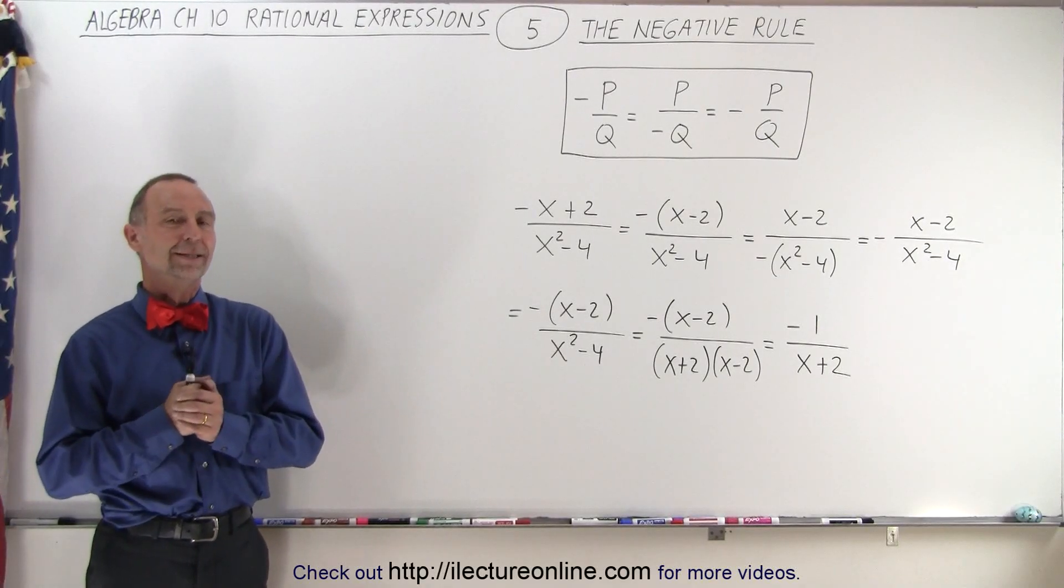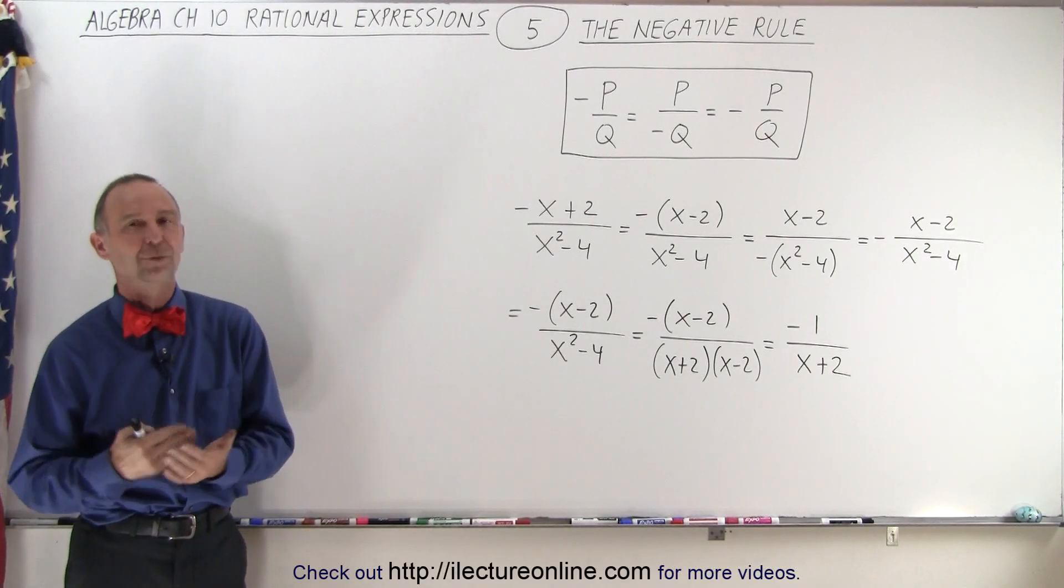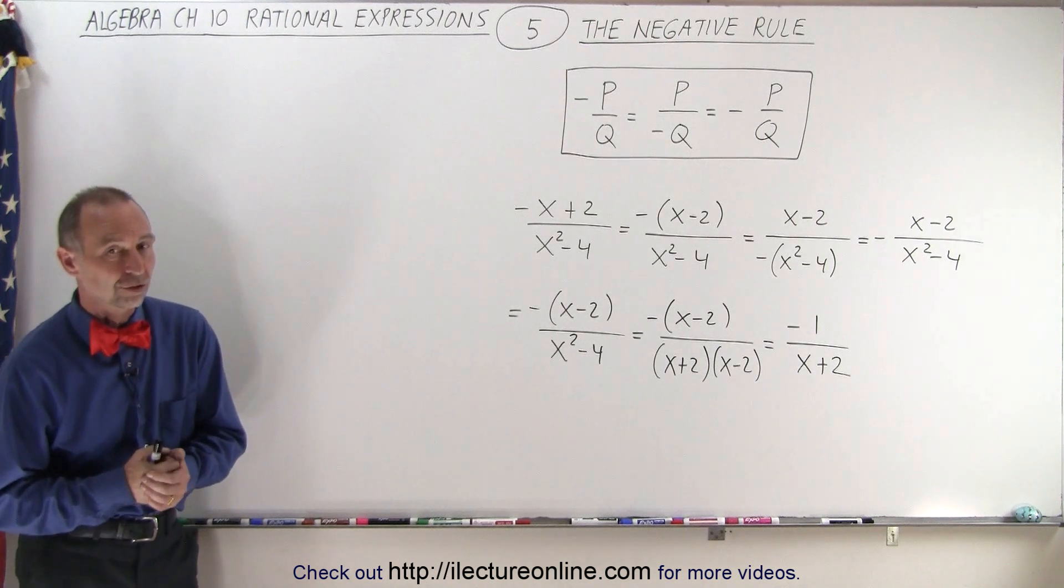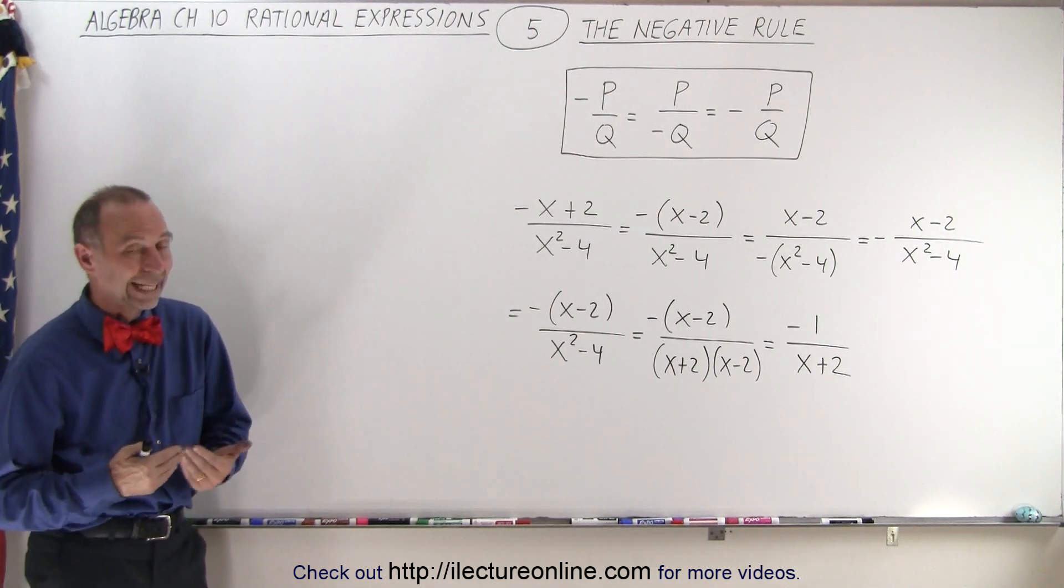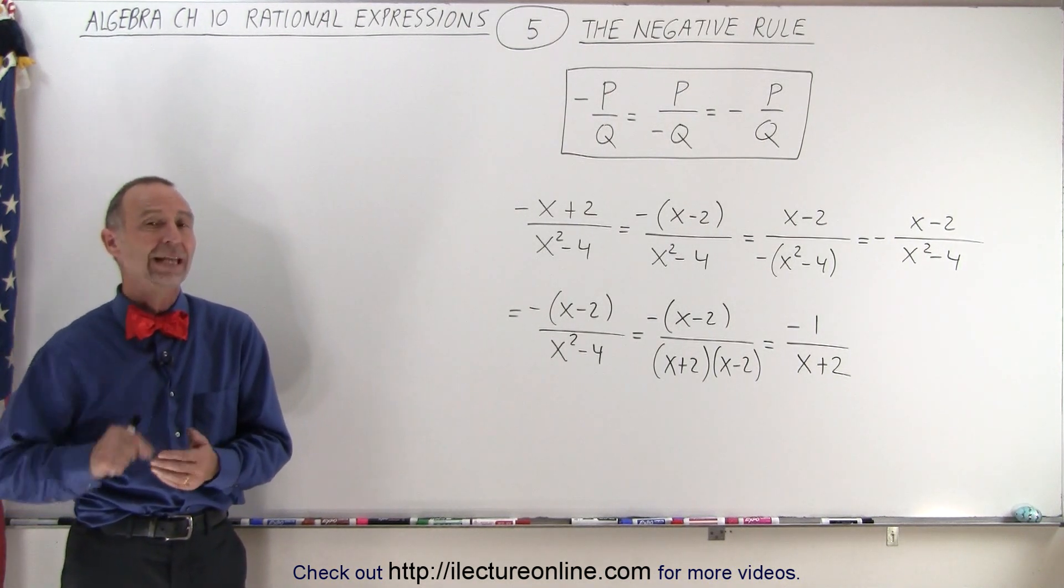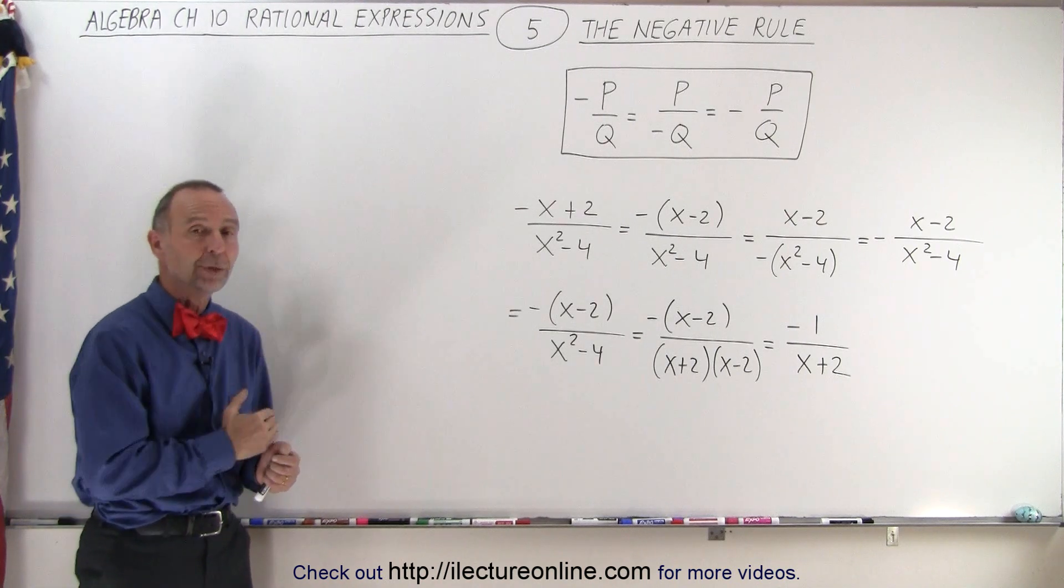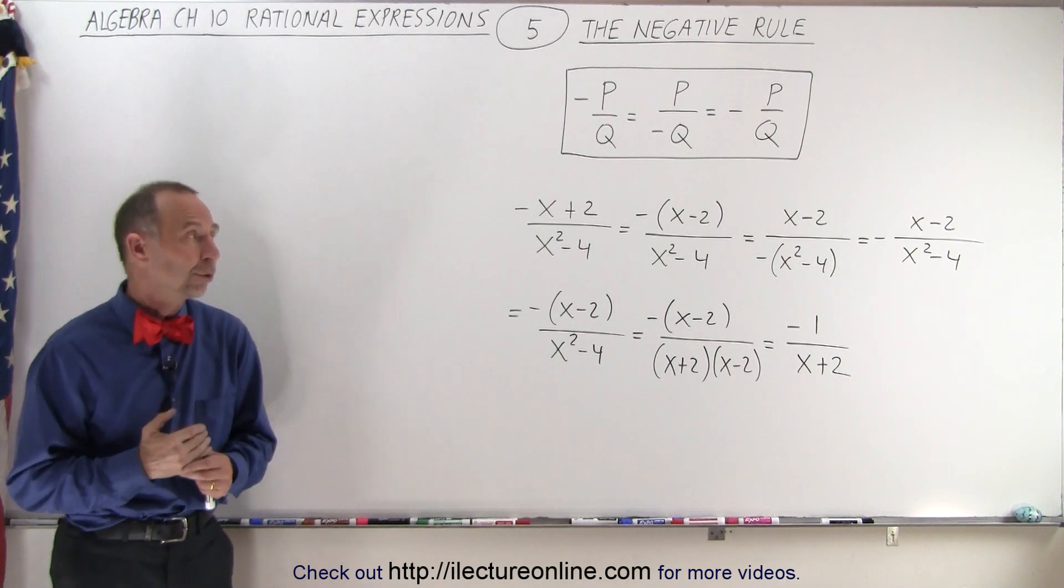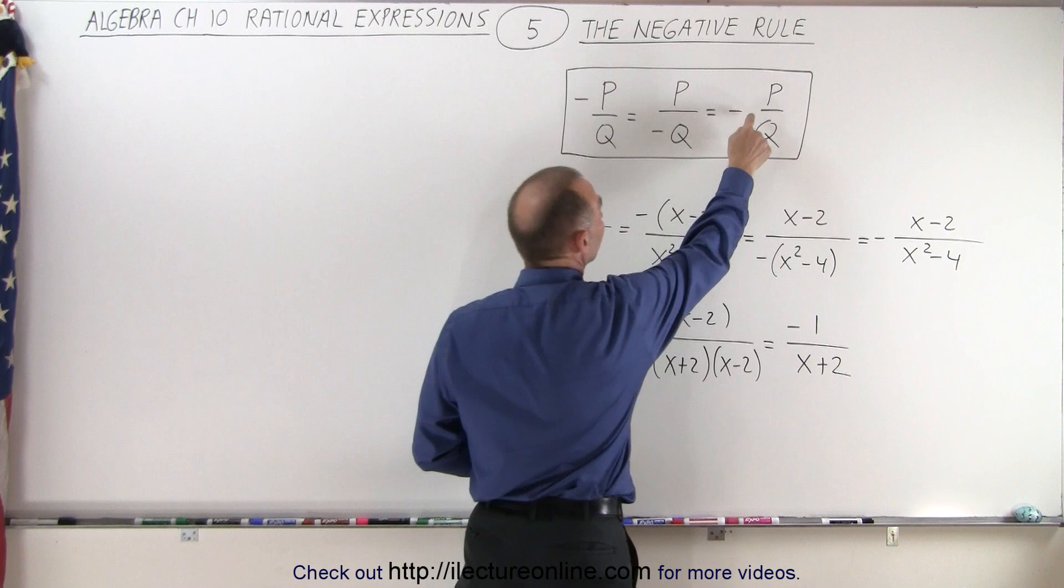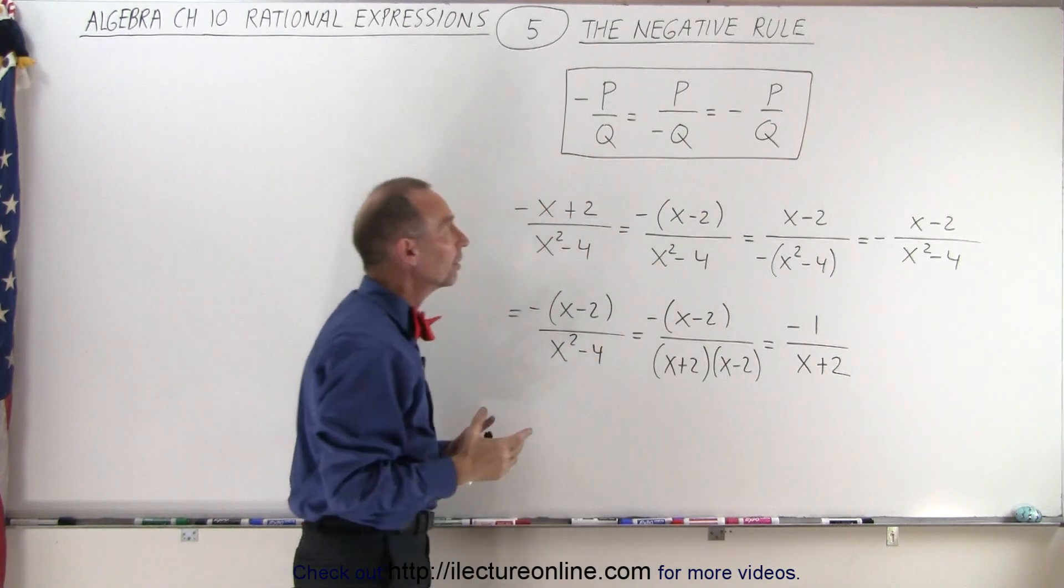Welcome to Electronline. Now let's talk about the negative rule of rational expressions. Just like with rational numbers, it doesn't really matter where we put the negative sign. In front of the numerator, in front of the denominator, or in front of the divisor, the line between the numerator and the denominator.